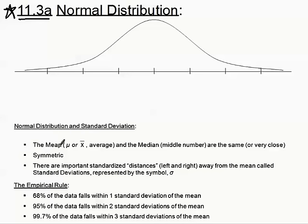We're talking about the mean, which has two different symbols. We've already talked about X-bar, but there's also a Greek letter, little mu. It kind of looks like an M, it kind of looks like a U, so we call it mu. Either of those symbols represents the mean, which is the average.